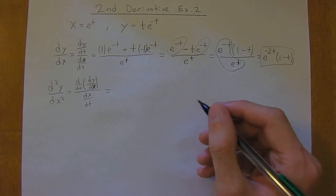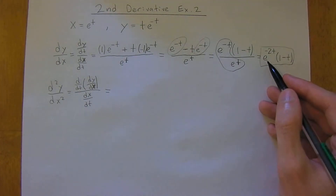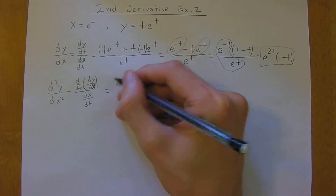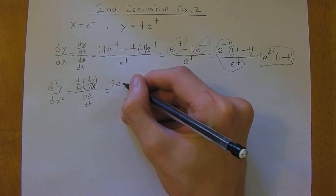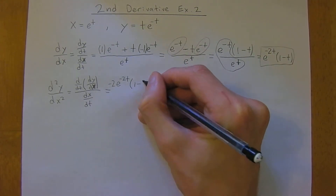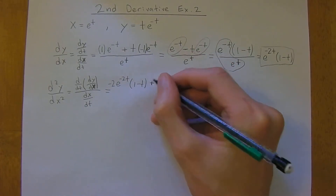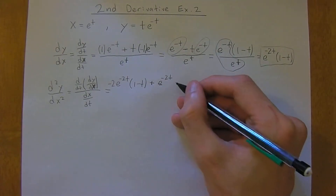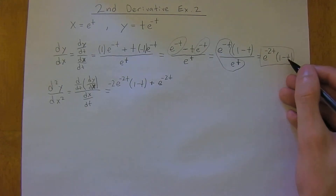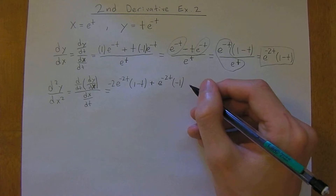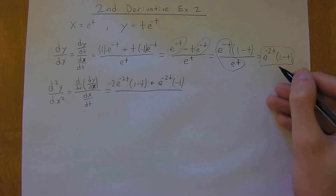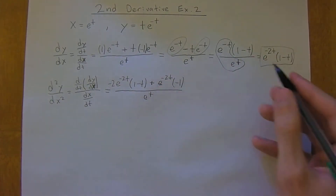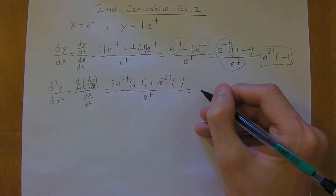So we apply the product rule to the numerator: the derivative of the first term times the second gives negative 2·e to the negative 2t times (1 minus t), plus the first term e to the negative 2t times the derivative of the second term, which is just negative 1. All of that is divided by dx/dt, which we already worked out as e to the t.